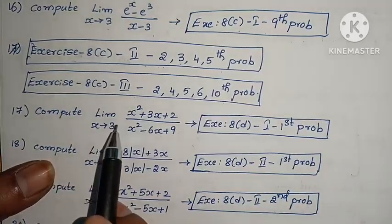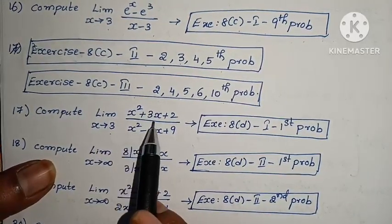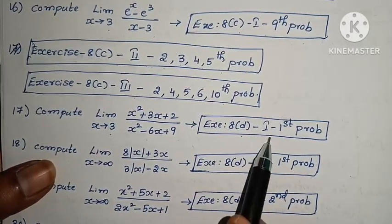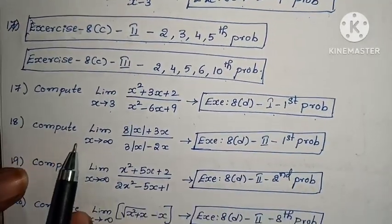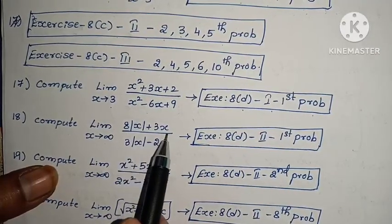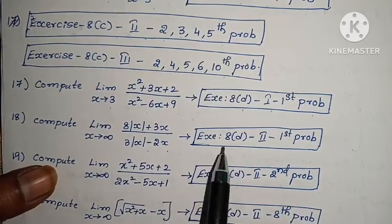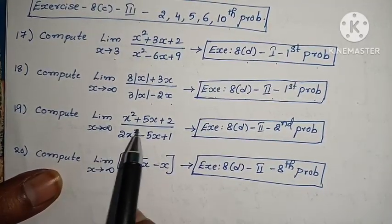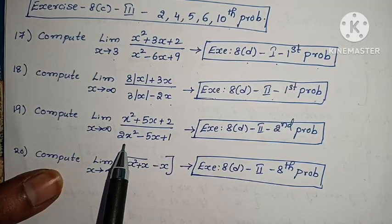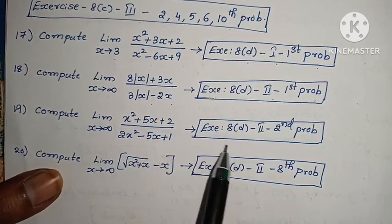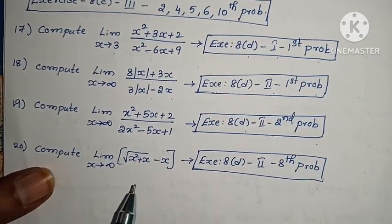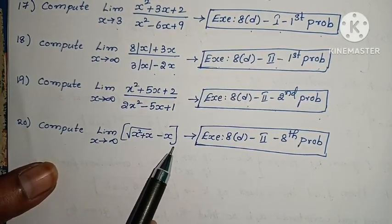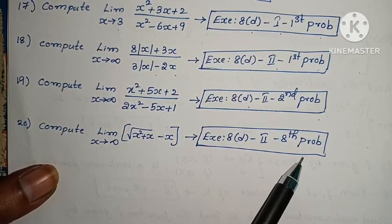Now, compute limit x tends to 3, x squared plus 3x plus 2 by x squared minus 6x plus 9 — C, first Roman, first problem. Compute limit x tends to infinity, 8 into modulus of x plus 3x by 3 into modulus of x minus 2x — C, second Roman, first problem. Next, compute limit x tends to infinity, x squared plus 5x plus 2 by 2x squared minus 5x plus 1 — C, second Roman, second problem. Next, compute limit x tends to infinity, root of x squared plus x minus x — C, second Roman, 8th problem.